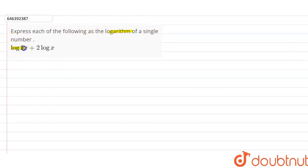What do we have to do? Here there are two terms: log 2x plus 2 log x. We have to simplify it with a single log.